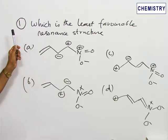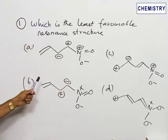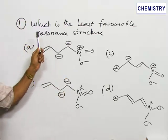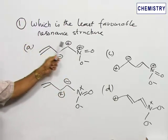Now, the first question is four resonant structures are given here, which is the least favorable resonant structure among these given?